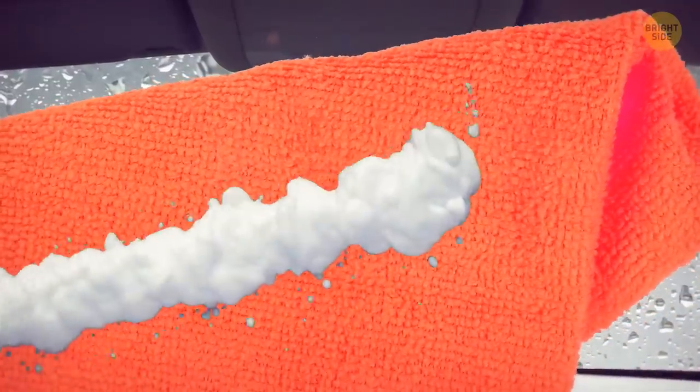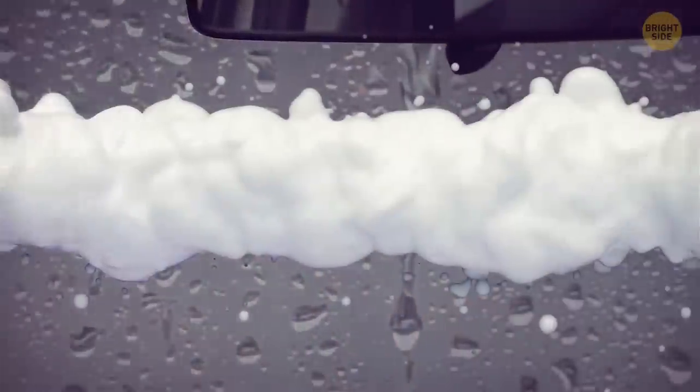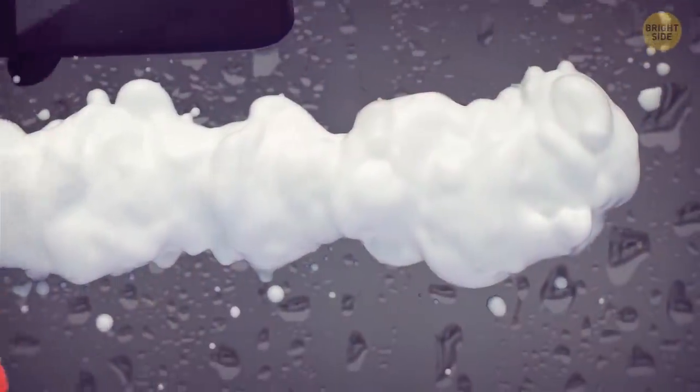If your windshield is fogging up more than usual, put some shaving cream on a clean towel, spread it over the interior of the windshield, then remove it with another towel.